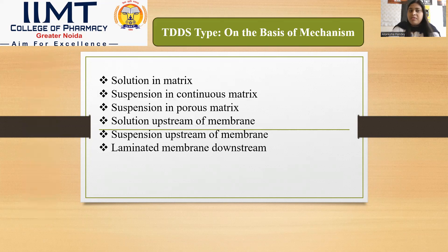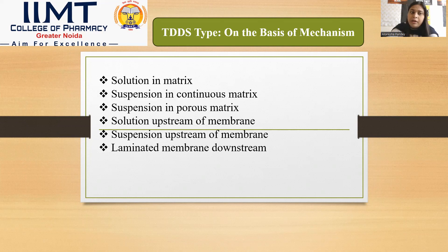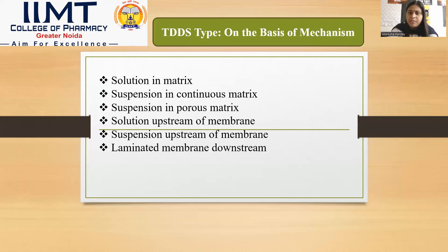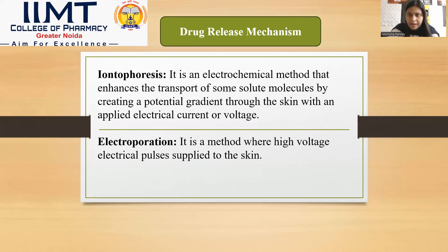TDDS types on the basis of mechanism: TDDS has six different types — solution in continuous matrix, suspension in continuous matrix, suspension in porous matrix, solution upstream of membrane, suspension upstream of membrane, and laminated membrane downstream. These are the kinds of transdermal drug delivery systems classified on the basis of their mechanism.